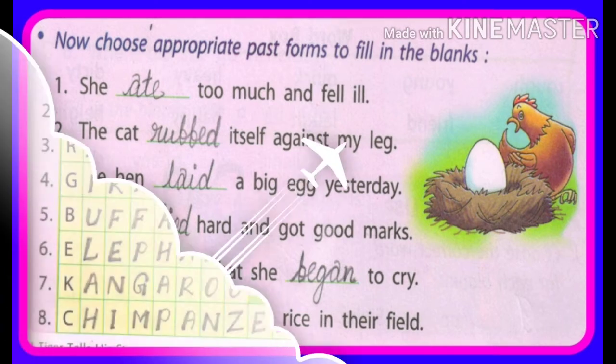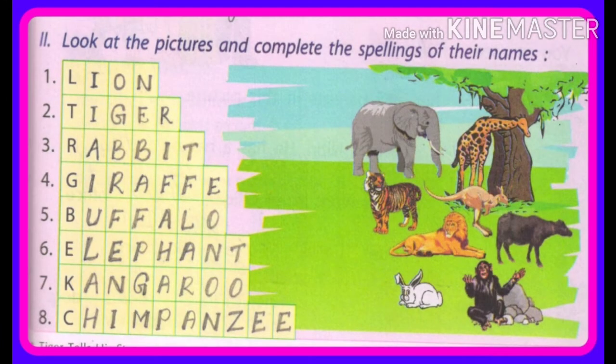And the next exercise. Look at the pictures and complete the spellings of their names. We have some pictures and we have to look at them and complete the spelling of their names in the box given. पहले picture को देखना है और यहाँ पे जो box दिया गया है उनमें spelling को complete करना है. Number one: lion. Number two: tiger. Number three: rabbit. Number four: giraffe. Number five: buffalo. Number six: elephant. Number seven: kangaroo. Number eight: chimpanzee.